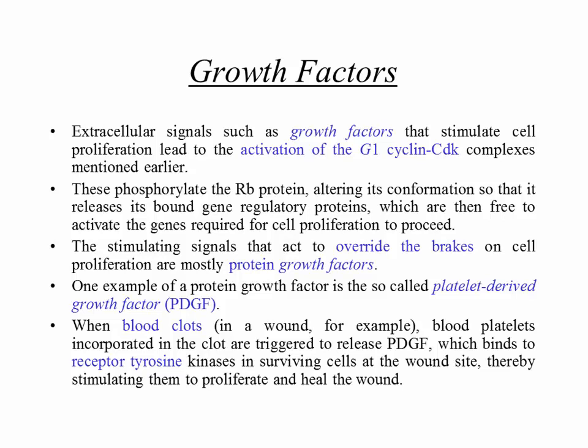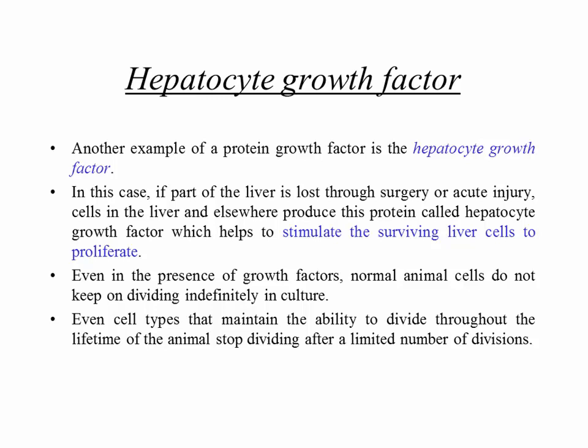In multicellular organisms there is normally a dynamic equilibrium between cell proliferation and cell death, but in situations like wounds or surgery, you need to turn up cell proliferation using growth factors. Another example is hepatocyte growth factor, which stimulates liver cells to divide. If part of the liver is lost through surgery or injury, cells produce hepatocyte growth factor to bind receptors on surviving liver cells, stimulating them to proliferate and restore the liver to its original size.